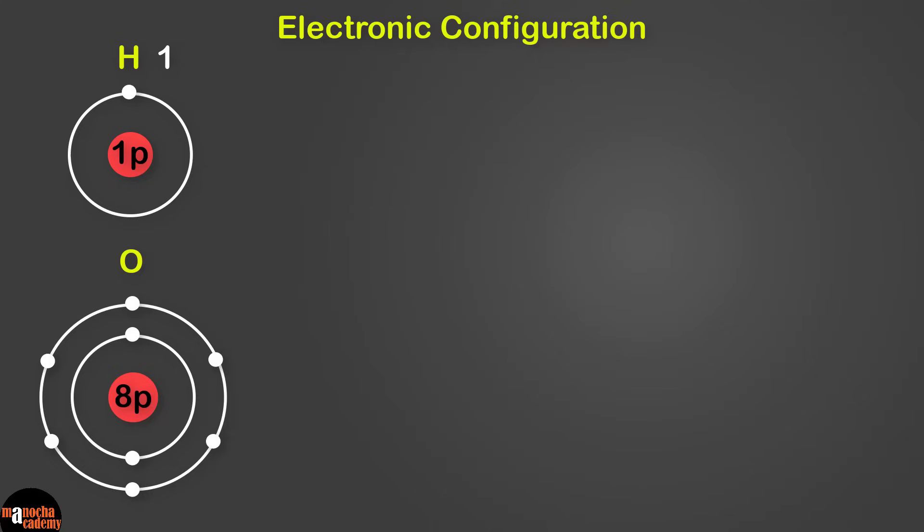Next let's look at oxygen. It has atomic number 8, so that's 8 protons and 8 electrons. If you draw its electron configuration, the first shell will have 2 electrons since it can hold a maximum of 2. And the second shell has 6 electrons. So oxygen is in period number 2 and it has 2 shells.